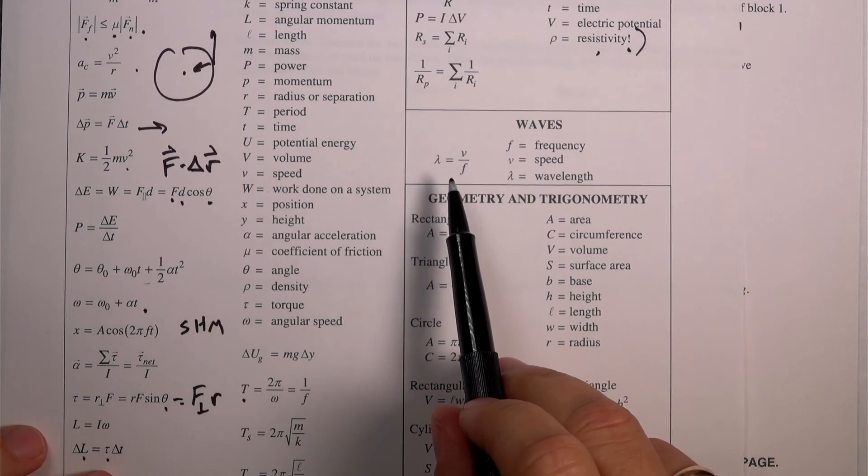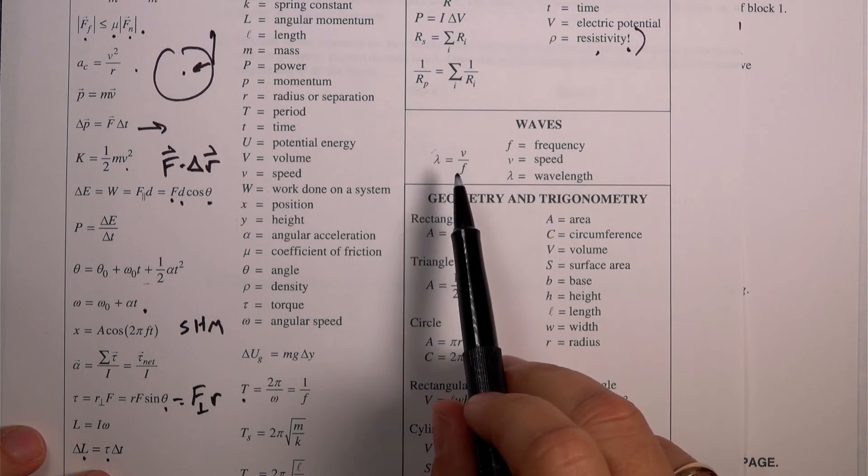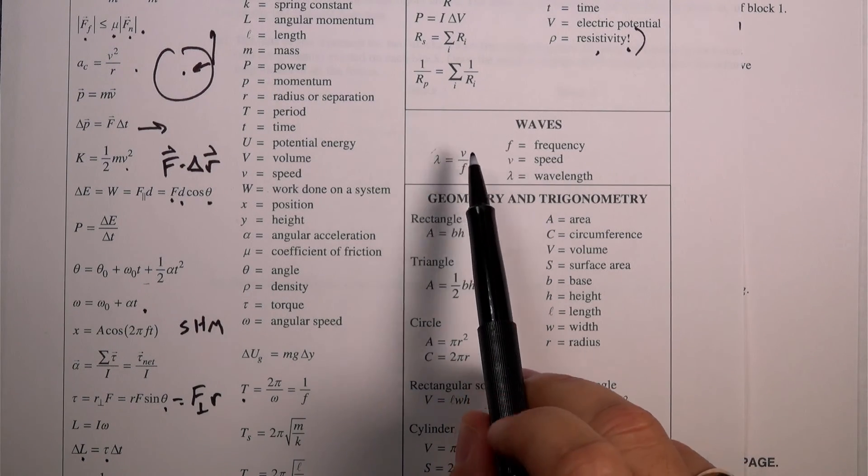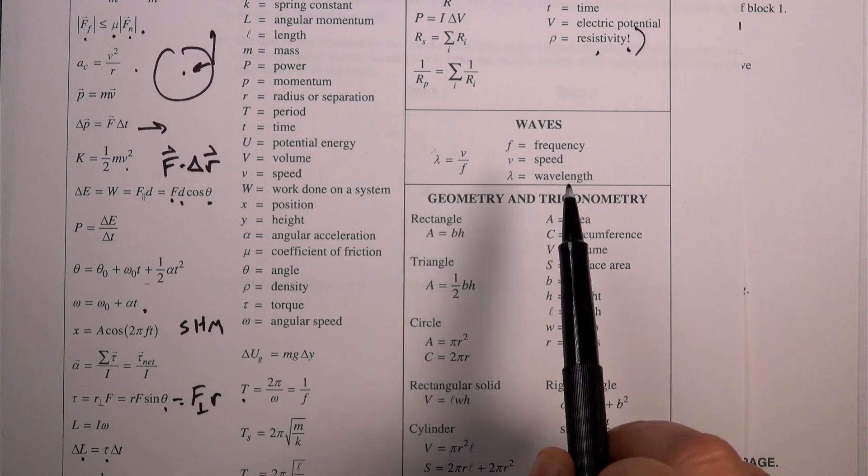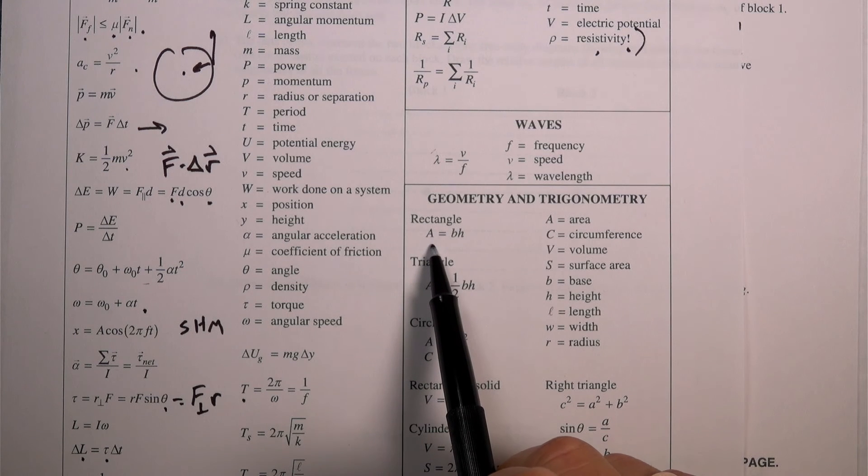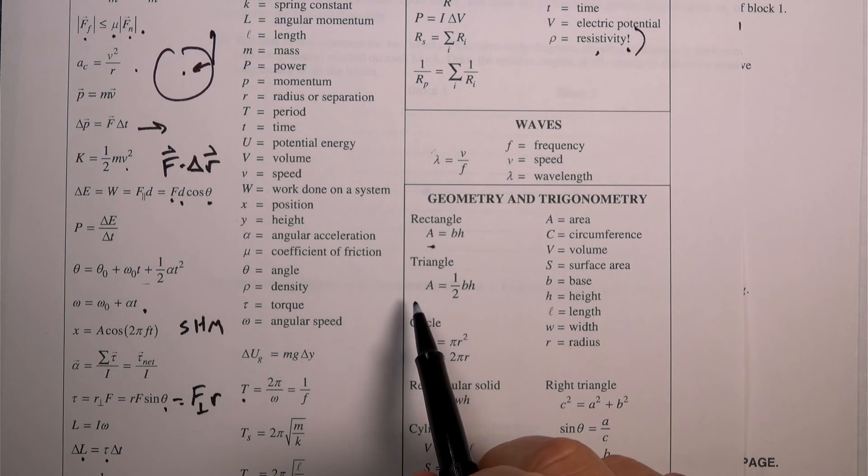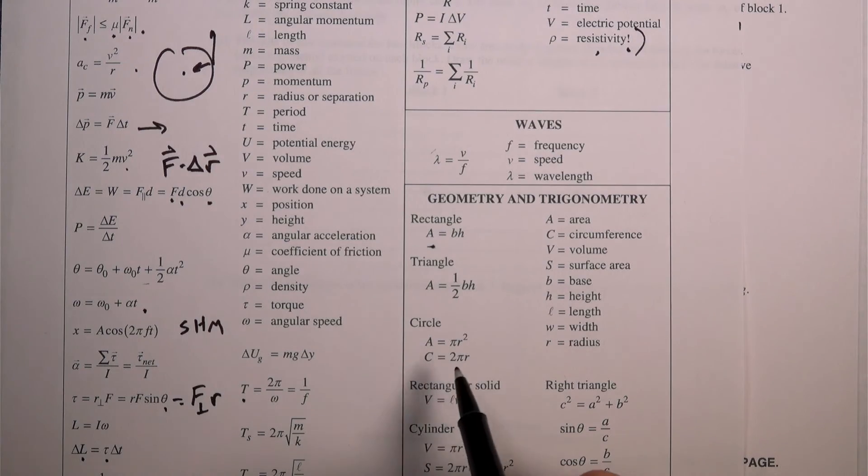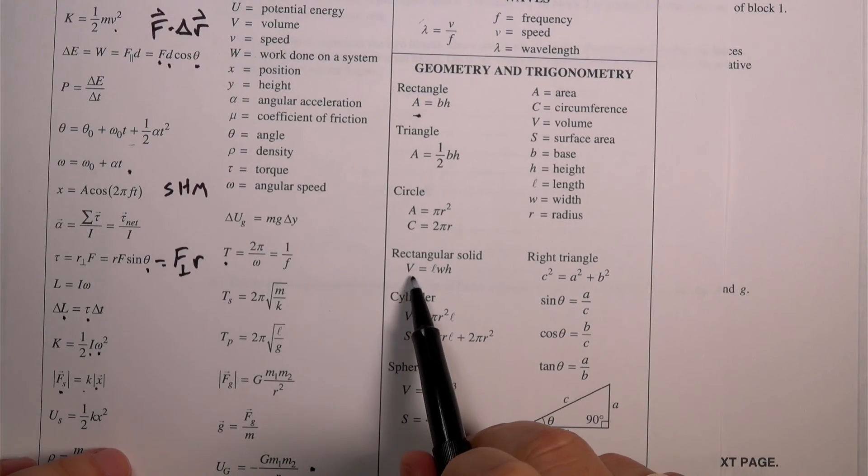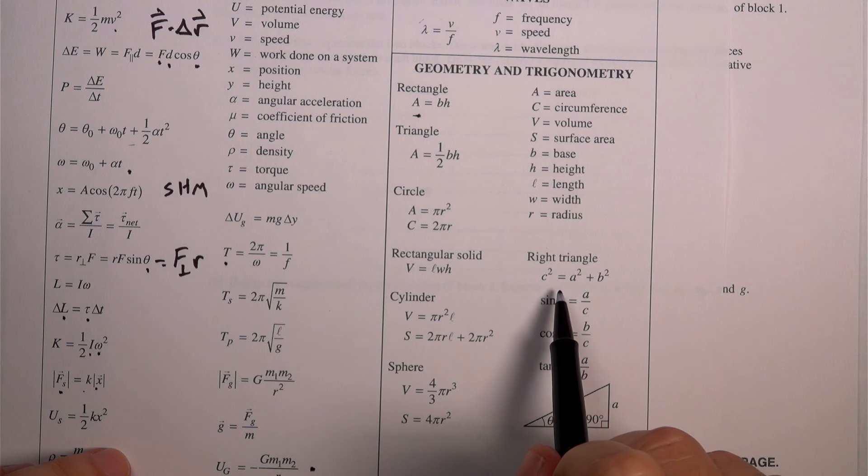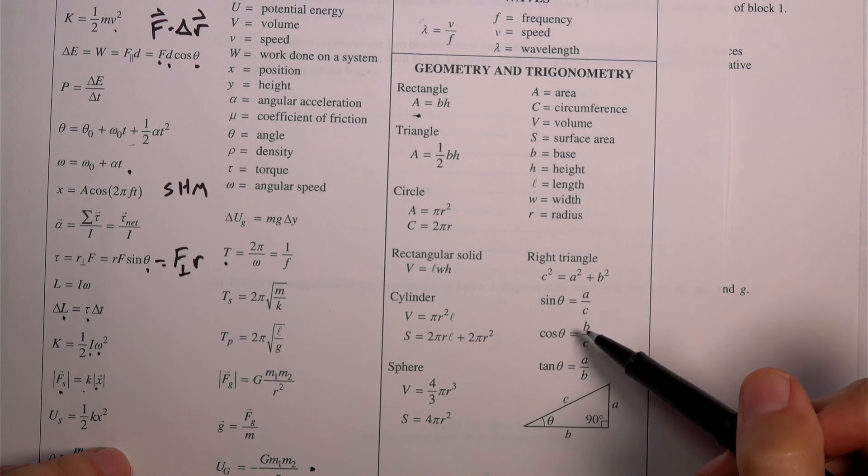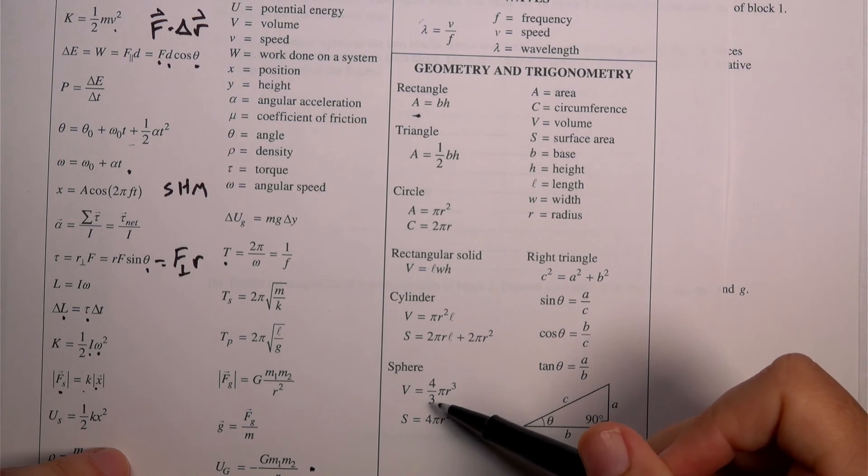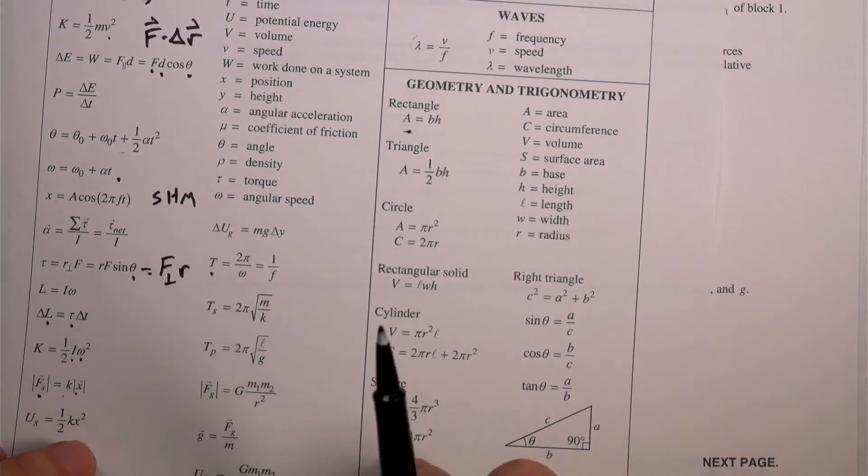Okay, waves. Lambda is the wavelength. This is the standard wave frequency velocity equation. The velocity of the wave, the frequency of the source. That's that. Okay. Geometry. The area of a rectangle. I like that. The area of a triangle. The area of a circle. Circumference of a circle. Rectangular solid. Right triangle. That's Pythagorean theorem. Volume of a cylinder. Surface of a cylinder. That's good. Sine, cosine, tangent. That's good. Volume of sphere, surface. Okay. So that's good.